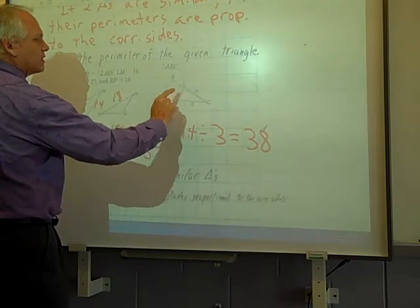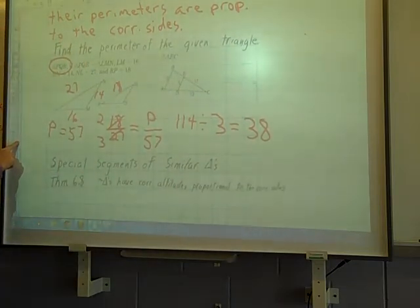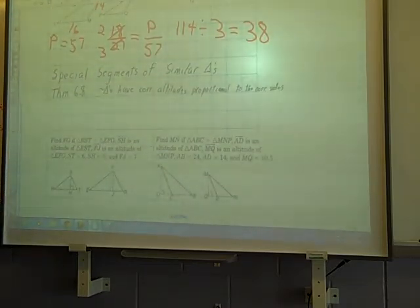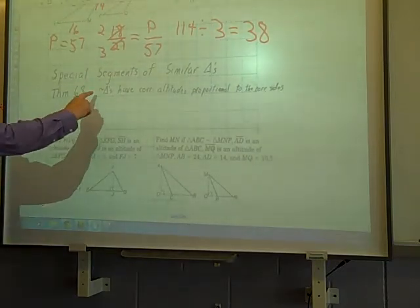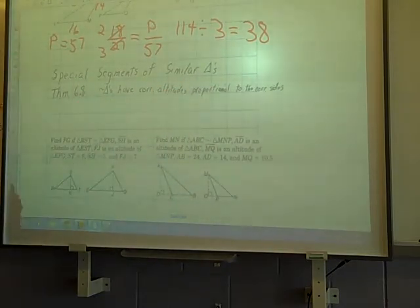I'm going to leave this one for you to do for your homework. See if you can figure that out. Now we do have some special segments for the theorems here. Theorem 6.8: similar triangles have corresponding altitudes proportional to the corresponding sides.